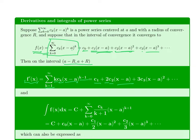The same thing works for integrals. If we integrate the function, we get a constant plus the term-by-term integral: c_0 times (x minus a), then c_1 times (x minus a) squared over two, c_2 times (x minus a) cubed over three, and in general c_k over (k plus one) times (x minus a)^(k+1).